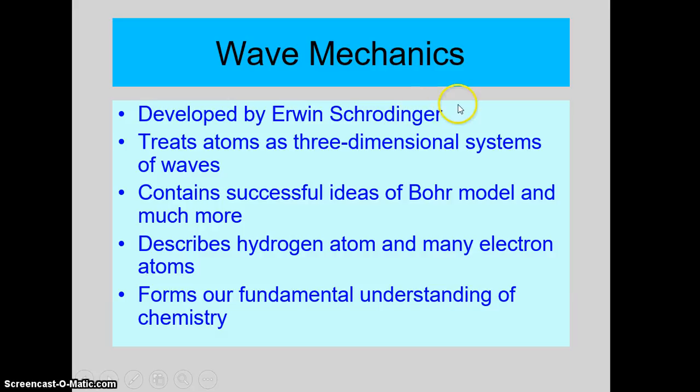Heisenberg used what's called matrix mechanics. Schrodinger used the old-fashioned system of differential equations that physicists were already used to. At any rate, let's take a look. So this is basically the difference.